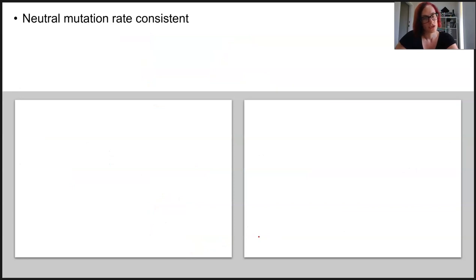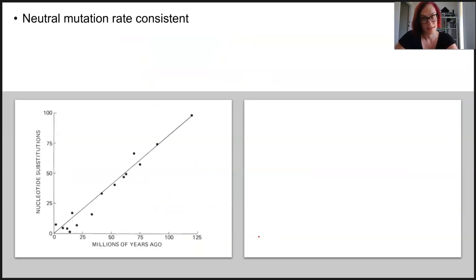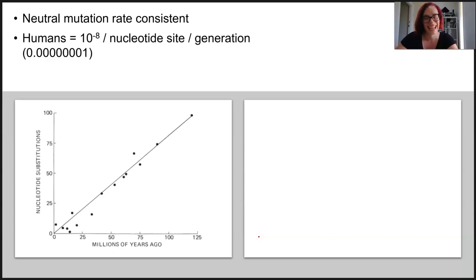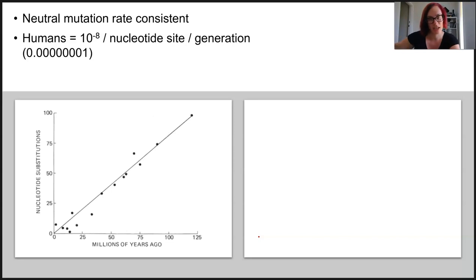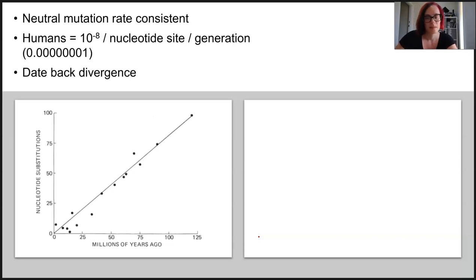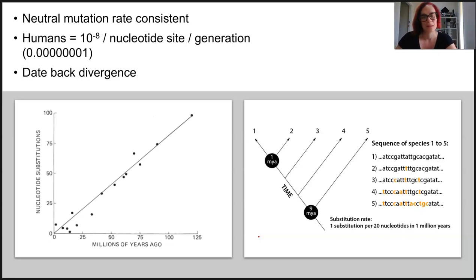The frequency at which these neutral mutations occur is actually quite consistent. In humans, they occur at a rate of 10 to the negative 8 per nucleotide site per generation. That's a remarkably small number, but considering the huge numbers of generations which have existed since our last common ancestor with any other species, it can still be a lot. Because we know how often these mutations occur, we can use it to date back to when we diverged from our most recent ancestor — so it's like a molecular clock.